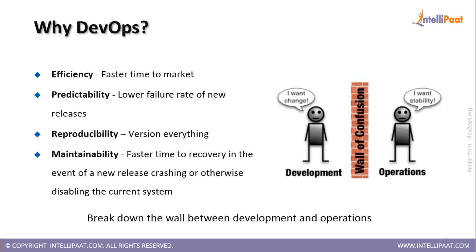The second advantage is predictability — a lower failure rate of new releases. Before releasing to a production environment, a release is first done on a sandbox or test environment. Once it goes to the sandbox environment, you do some tests; if any errors are there, you rectify them. Then it goes to the development environment, then a validation phase. In all these phases you ensure everything is working fine before releasing to production. Another advantage is version everything — tracking who made what changes — which I'll cover in detail under version control systems. Maintainability includes faster time to recovery in the event of a new release.